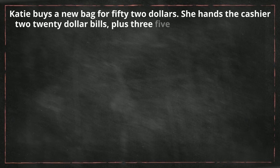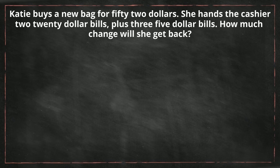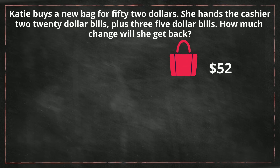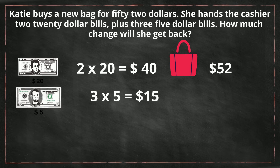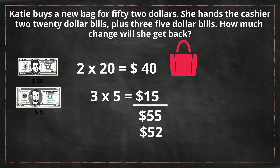Number four: Katie buys a new bag for fifty two dollars. She hands the cashier two twenty dollar bills and three five dollar bills. How much change will she get back? Let's total up how much money she gave the cashier. Two times twenty is forty, and three times five is fifteen, so she gave the cashier fifty five dollars. We now subtract the price of the bag — fifty five minus fifty two — and she will receive three dollars back in change.